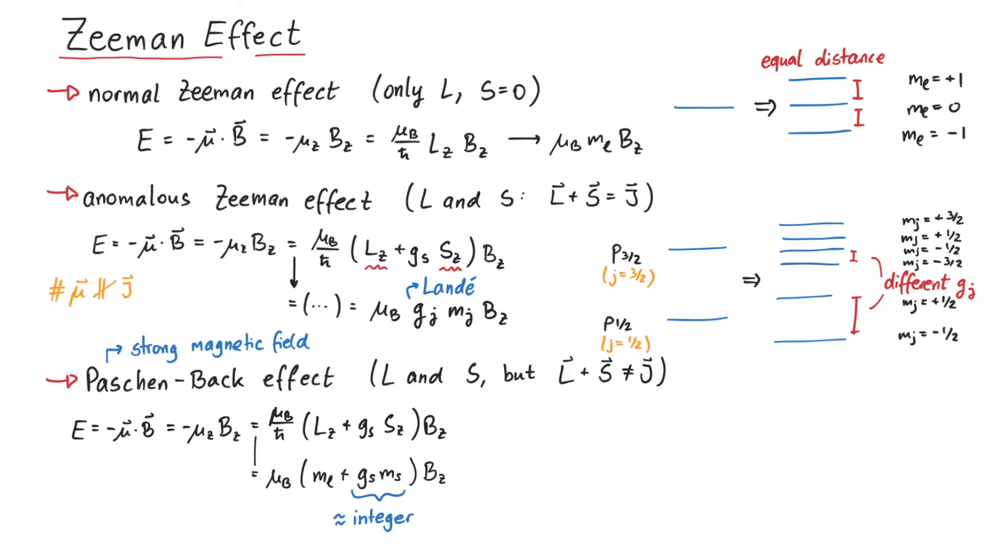To illustrate this, let's take the p1-half and p3-half states again. The letter p tells us that they are in fact l equals 1 states. After doing some calculations, we get 5 new energy levels, corresponding to those values of ml, ms and ml plus 2 ms.